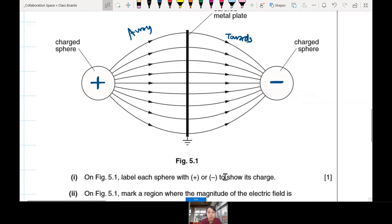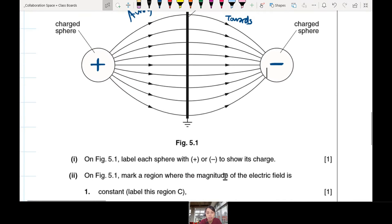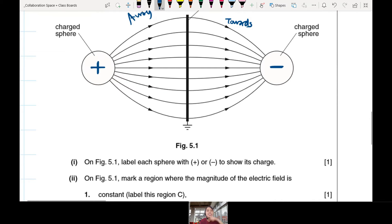On figure 5.1, mark a region where the magnitude of electric field is constant. Where is constant? Just now we mentioned how do you know the electric field strength, aka magnitude of electric field. E is basically equivalent to the spacing between lines, the electric field lines. So you look and see, in the region near this plate here to here, roughly the same distance everywhere. So all this is where you can say the electric field strength is constant, the uniform electric field, roughly.